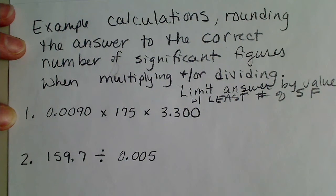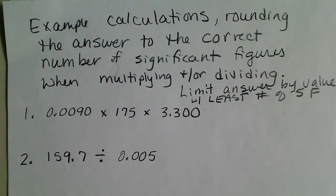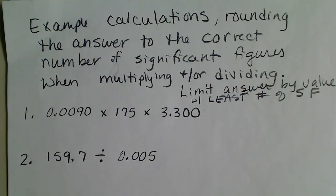That's really the rule. Just like sign rules for multiplication and division — where we know the sign of our answer, whether it's positive or negative, before we actually do the calculation — this is very similar. We can know the number of significant figures that our answer is going to have before we do the calculation.